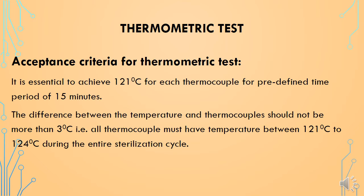Acceptance criteria for the thermometric test: it is essential to achieve 121 degrees Celsius for each thermocouple for a predefined time period of 15 minutes. The difference in temperature between thermocouples should not be more than 3 degrees Celsius — that is, all thermocouples must have temperatures between 121°C and 124°C during the entire sterilization cycle.